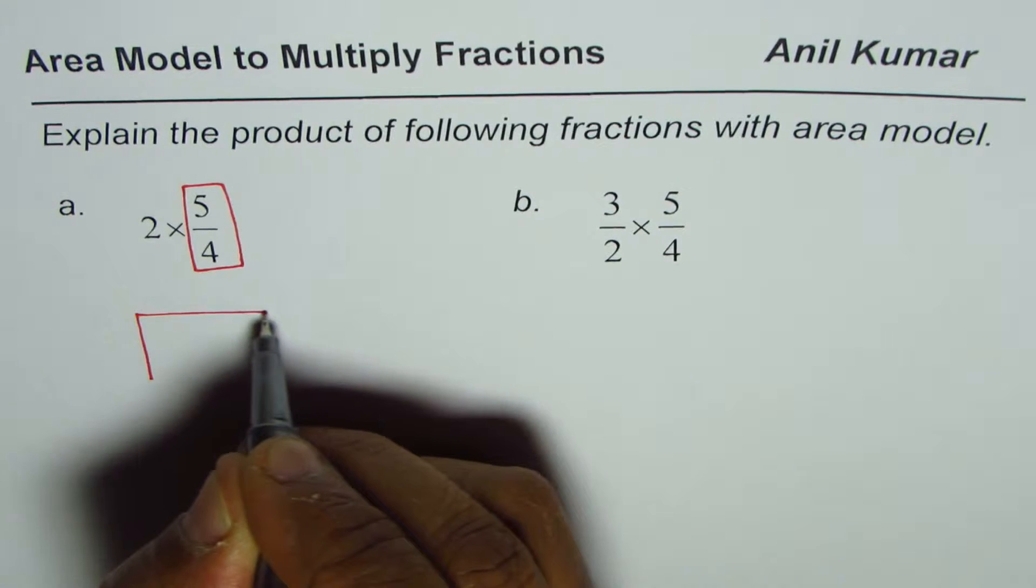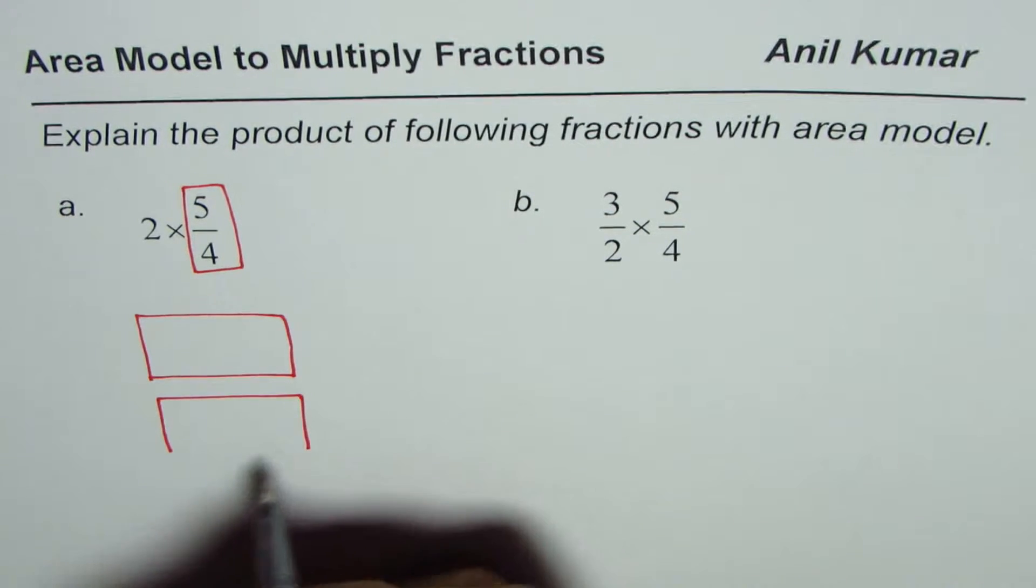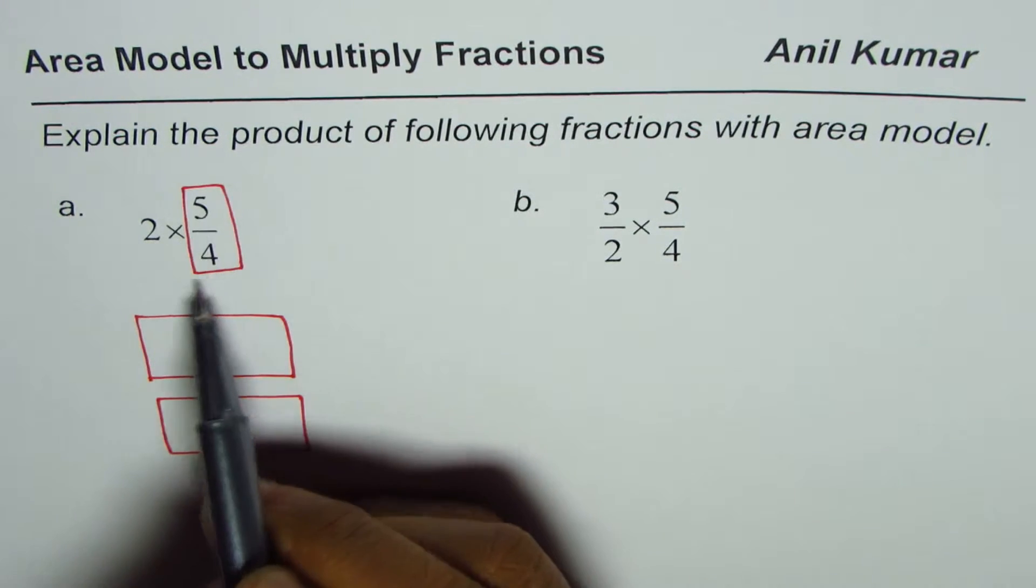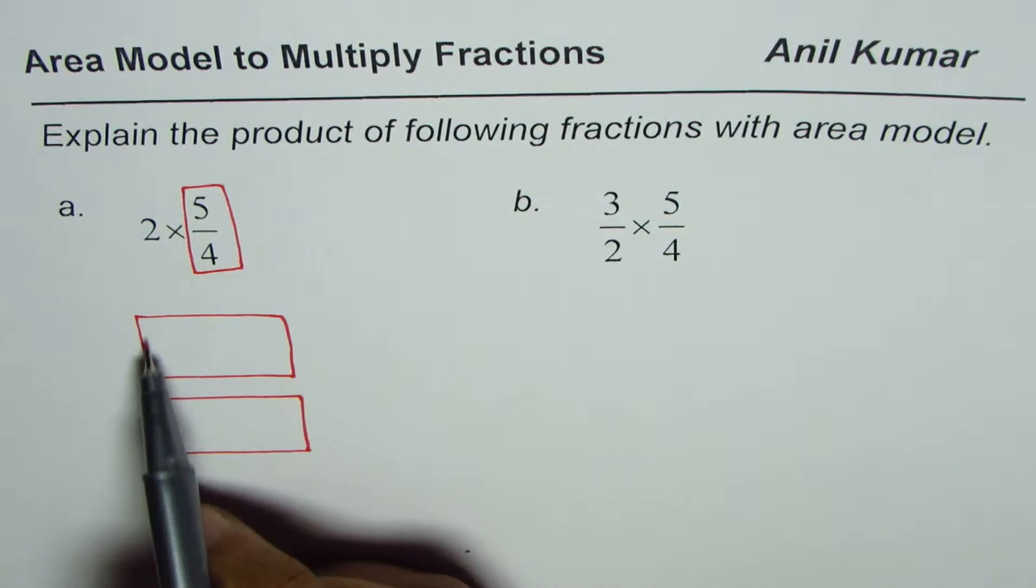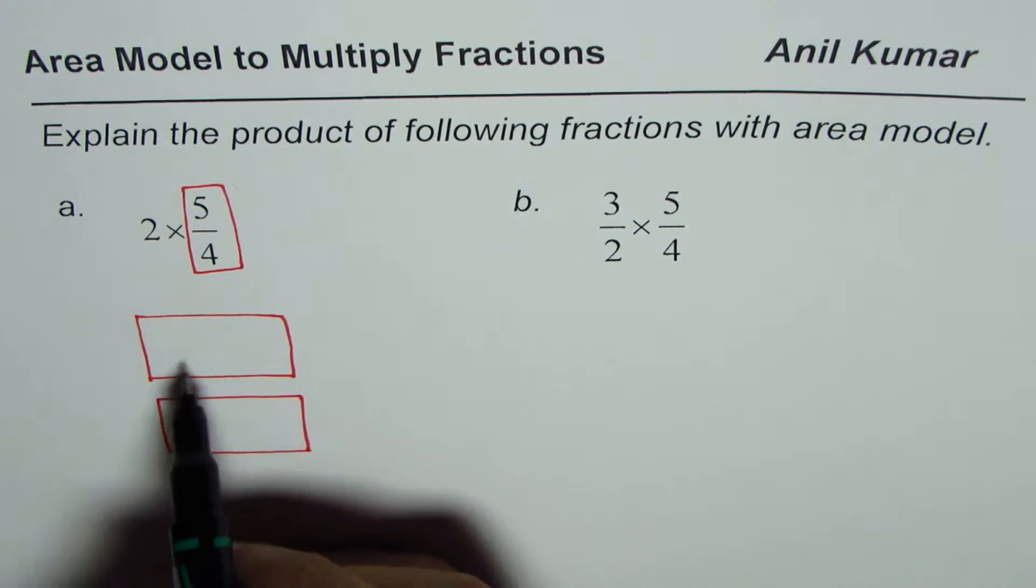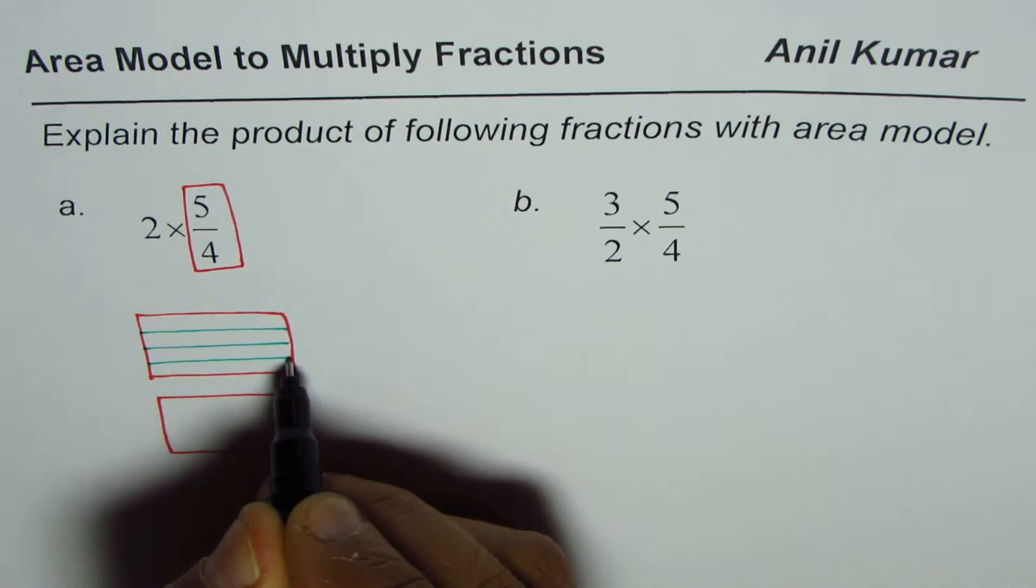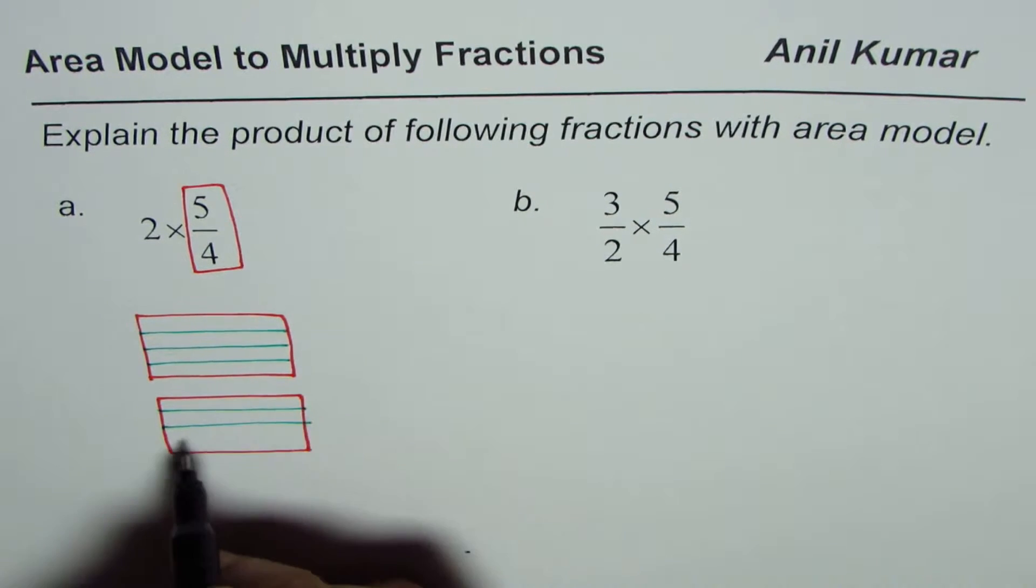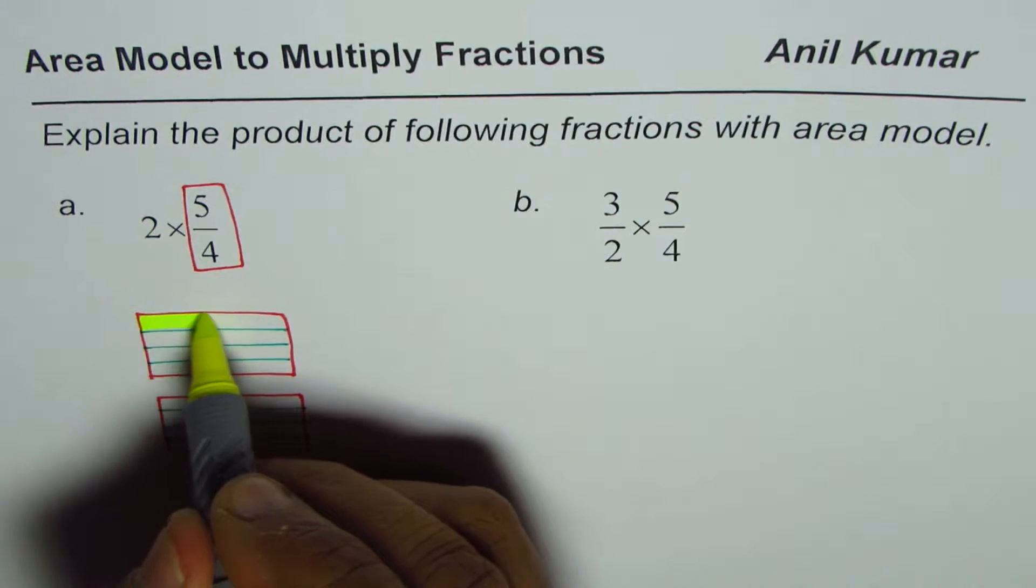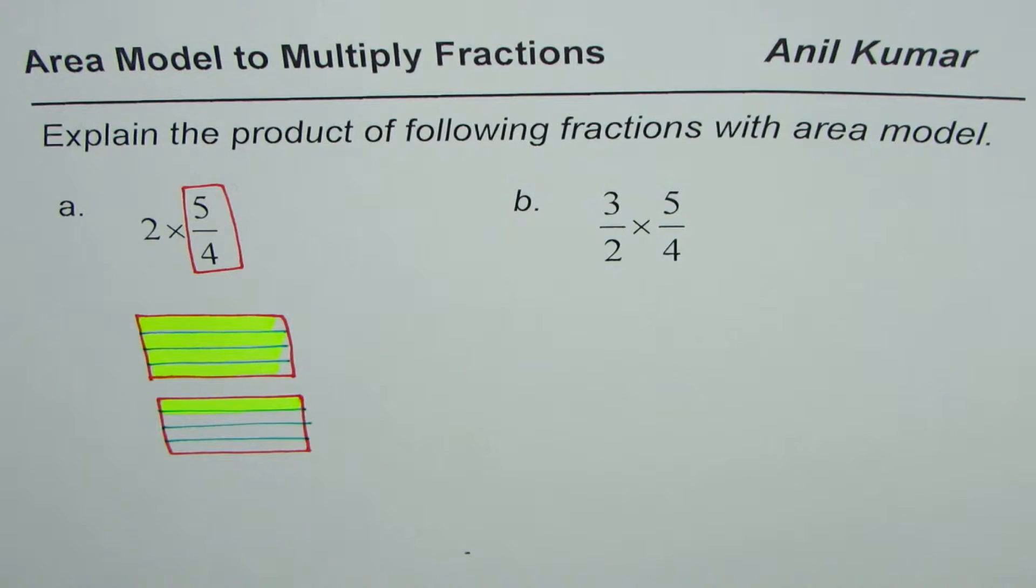The numerator is higher than the denominator. It's an improper fraction. It can be represented by two rectangles. This is the first one, and then we have one more. Since the numerator is more than the denominator, 5 over 4 is 1 whole and 1 fourth. To give you a better picture, let me divide each rectangle into 4 equal parts. And I'll select 5 of them. So selecting 5 means here is the first one, second one, third one, fourth one, and the fifth one.